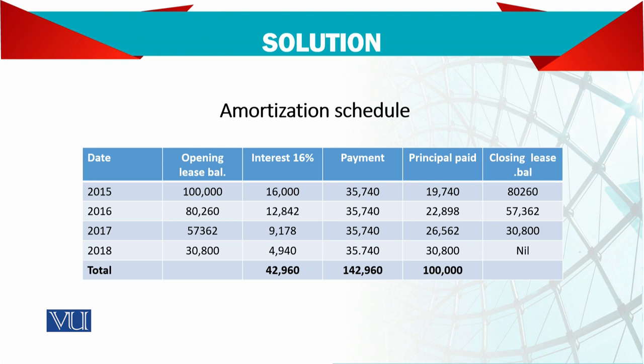Now for 2016, the closing balance becomes the opening figure. Interest on it at 16% is 12,842, and then we make a payment of 35,740, so the principal payment in it is 22,998. Then for 2017, the closing balance of 2016 becomes the opening balance of 2017, and again interest at 16% is charged.